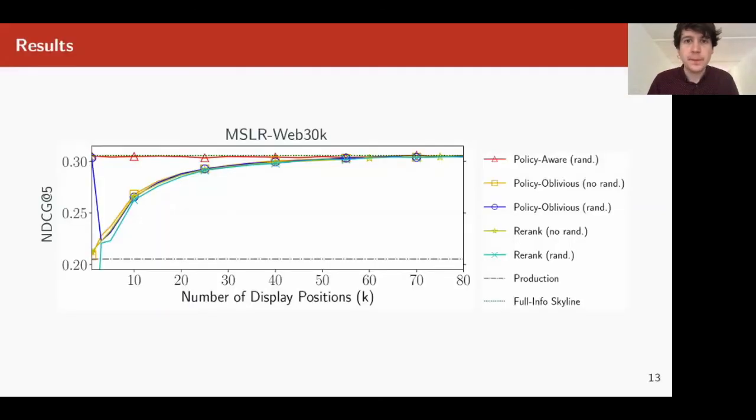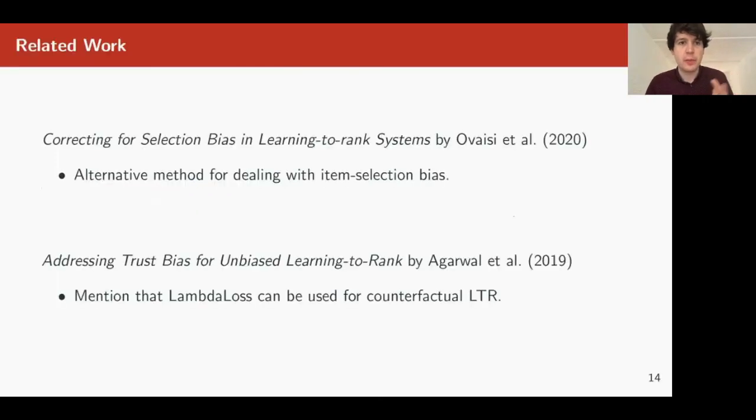Before I conclude this talk, I want to give a shout out to some recent existing work. The first is Correcting for Selection Bias in Learning-to-Rank Systems, a WWW 2020 paper published in April. They also have a way of dealing with this bias. Unfortunately, the work is so recent that we couldn't compare it. The other one is Addressing Trust Bias for Unbiased Learning-to-Rank from last year. They're the first that mentioned the possibility of using lambda loss for counterfactual learning to rank, but they didn't show how it's done.